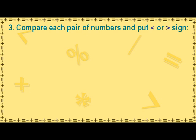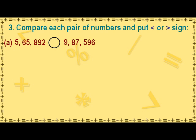Compare each pair of numbers and put a less than or greater than sign. To find whether a number is less than or greater than the other, we compare the place value of the digits in the two numbers beginning from the left side. The first number has digit 5 in the lakhs place value, which is smaller than the digit 9 in the lakhs place of the second number. Hence, the first number is smaller, so we put a less than sign after the first number.